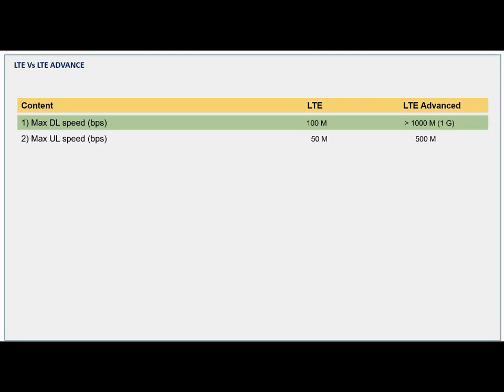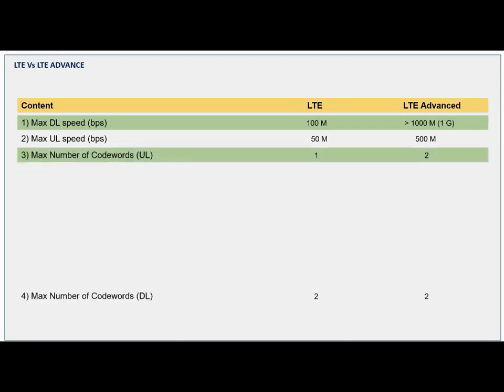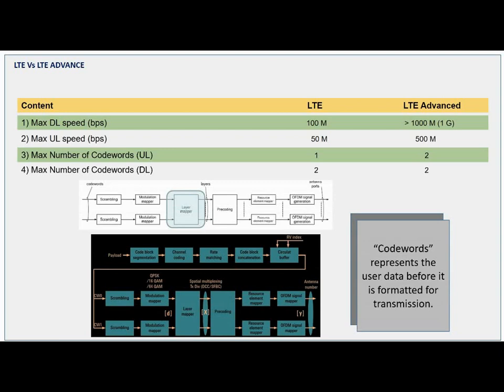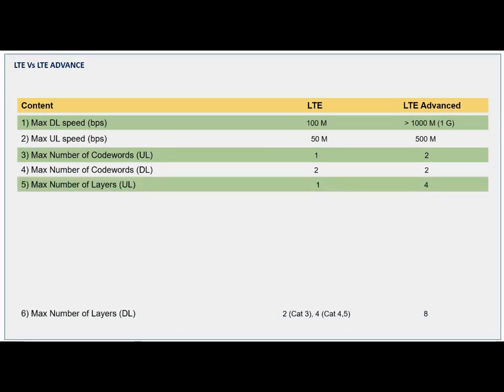To achieve this throughput, some upgrades were done in the system. Regarding code words: initially the UE was allowed to use only one code word for layer mapping, while in LTE Advanced the UE can use two — almost double. A code word represents the user data before it is formatted for transmission; it is the raw data before scrambling.